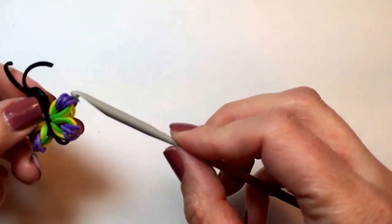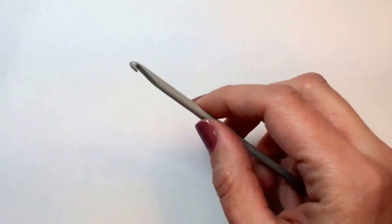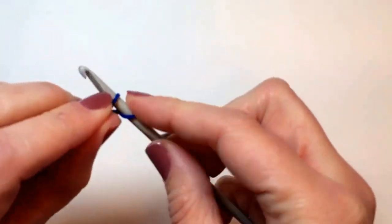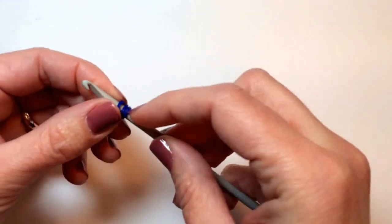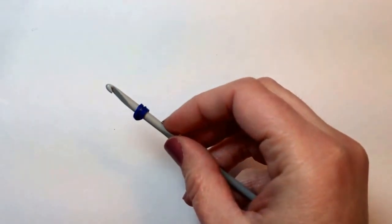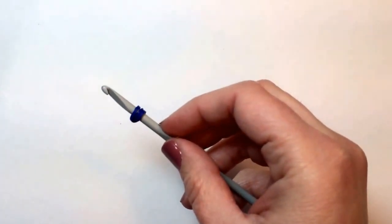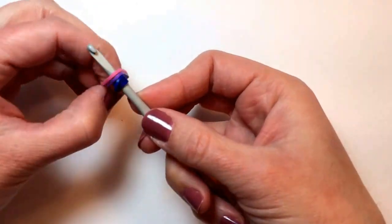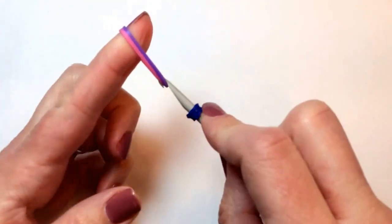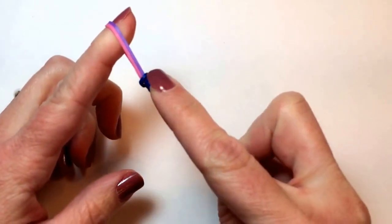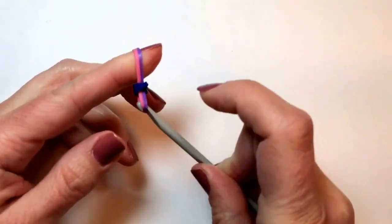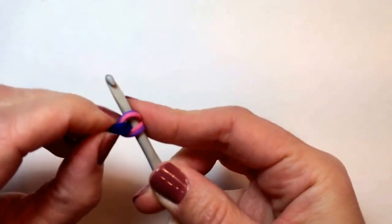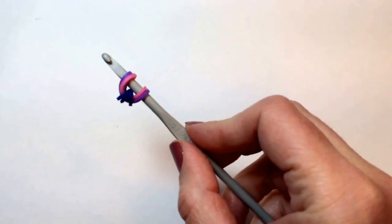So take the rubber band that you want to be at the tip of the wing and wrap it around your hook three times. And then take the two colors or two rubber bands of the same color that you want to be the wing itself, place those on your hook, pull it tight, and slide over to the middle. And that's how you create one of the wings.